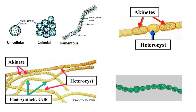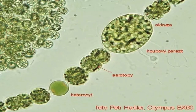Some filamentous species can differentiate into several cell types: vegetative cells, which are the normal photosynthetic cells formed under favorable growing conditions; and akinetes, a climate-resistant spore that may form when environmental conditions are harsh.